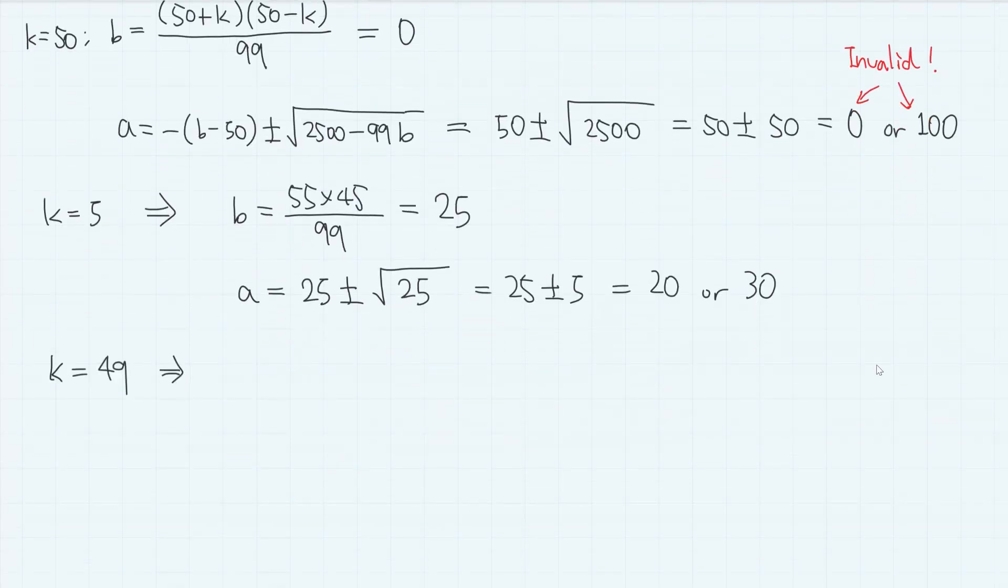And when k equals 49, then b equals just 1. And a equals 49 plus minus square root of 2500 minus 99. So 2401. And square root of 2401 is 49. So we have 0 or 98. And since 0 is an invalid value for a, only a equals 98 is valid.